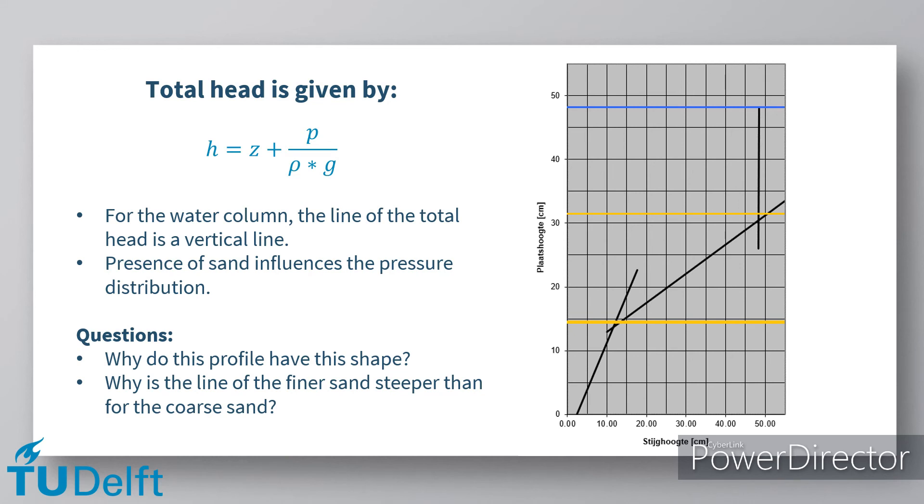That is, why does the total head increase quicker for the finer sand than it does for the coarse sand?